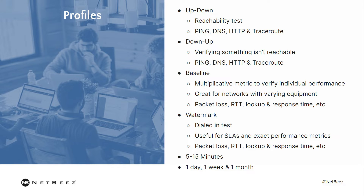Baseline is going to give you a multiplicative number, like 1.5x or 2x the day, week, or monthly average. Really good for verifying if you have equipment with a wide range, if you're in the middle of a refresh or have some legacy equipment that's going to give you some varying responses. Here you'll get packet loss, round-trip time, look-up, response time, et cetera.